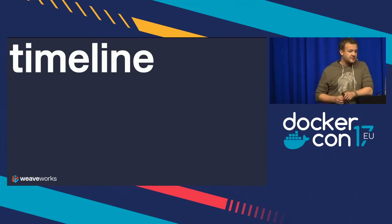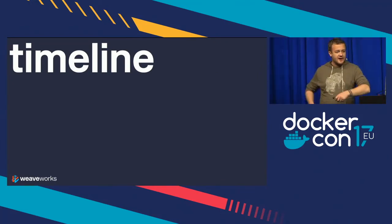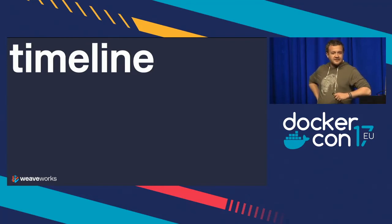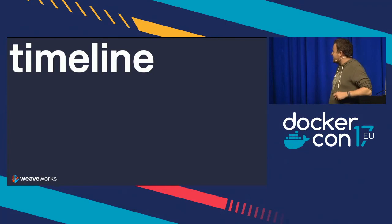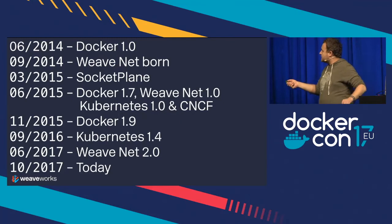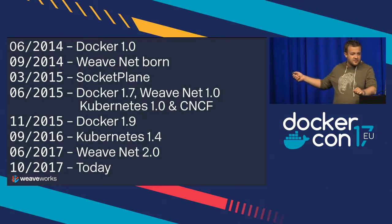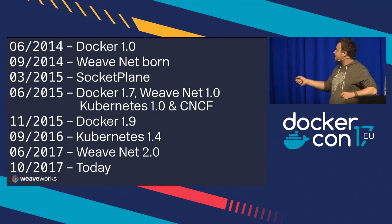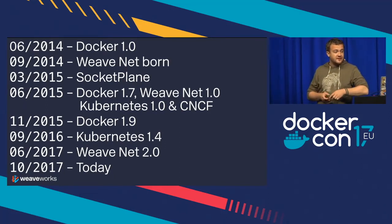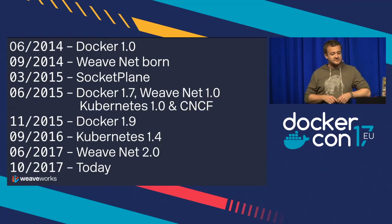It'd be good to look at what happened in the past and recap the timeline — how things evolved in the last three years or so. In 2014, we had Docker 1.0. Shortly after that, Weaveworks released WeaveNet — that was in September 2014.